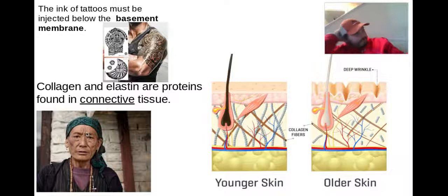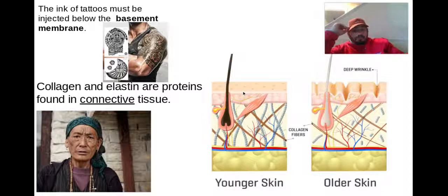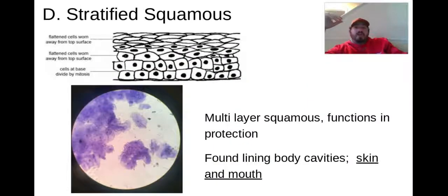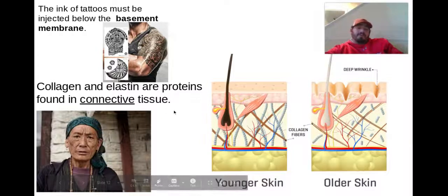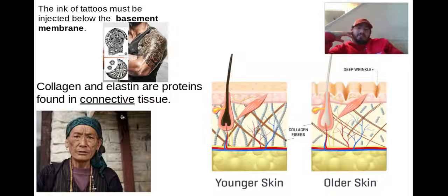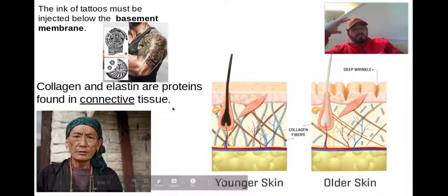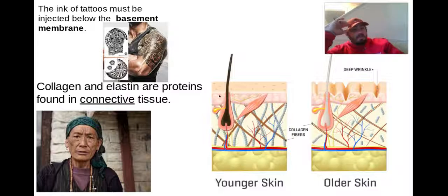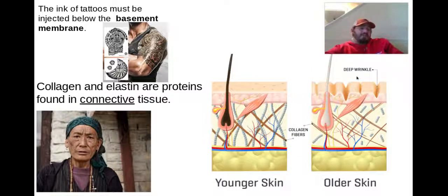Something else to think about: wrinkles as you get older. Wrinkles don't actually have to do with the skin — our stratified squamous cells outside. They actually have to do with the connective tissue. Wrinkles come from the collagen and elastin proteins in that connective tissue. Below the stratified squamous, we have the basement membrane and all this connective tissue — over time those collagen fibers get weaker and smaller, causing the skin to wrinkle. So wrinkled skin is from our connective tissue, not our epithelial tissue.